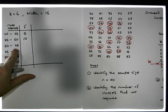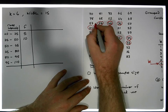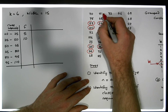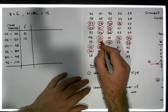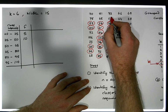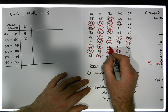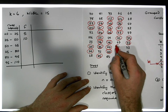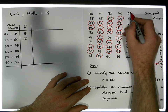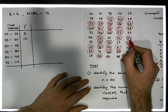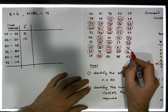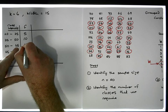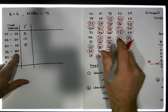How many of the remaining values are less than 65? There's one, two, three, four, five, six, seven, eight, nine, ten, eleven, twelve, thirteen, fourteen, fifteen — this looks like 15 values less than 65, so we have a frequency of 15 here.